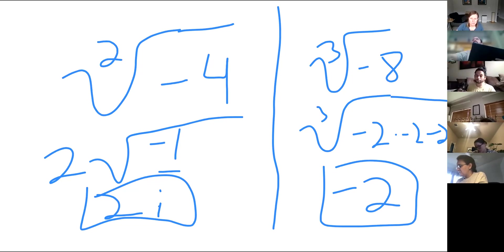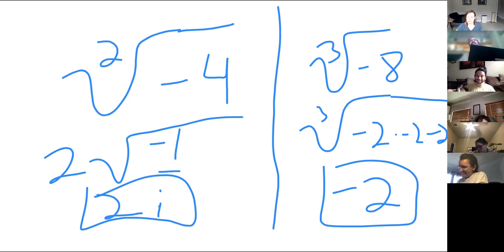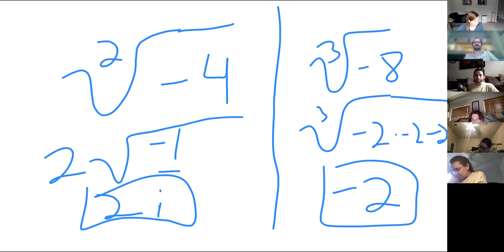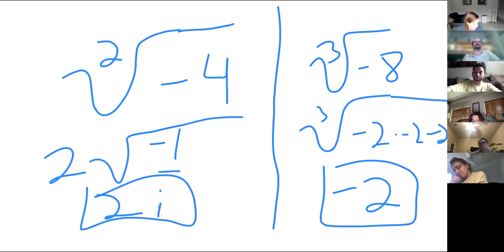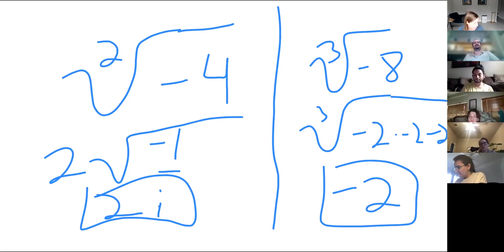Okay, thank you. On this problem, the name of the game — I don't think the eight is the thing you're battling. Eight is two times two times two; I can pull it out as a two. It's really that negative that they're trying to get at here.